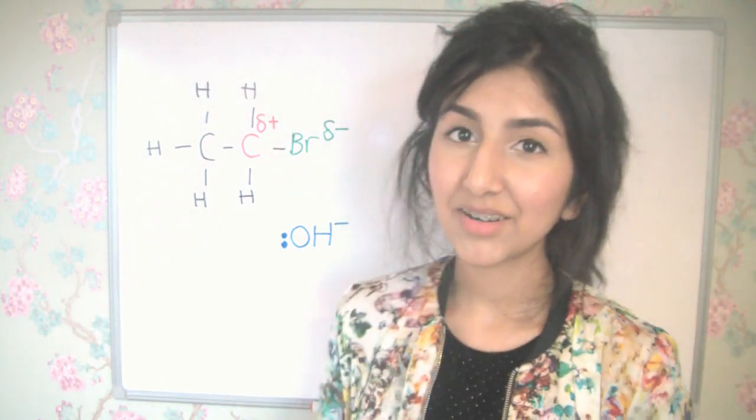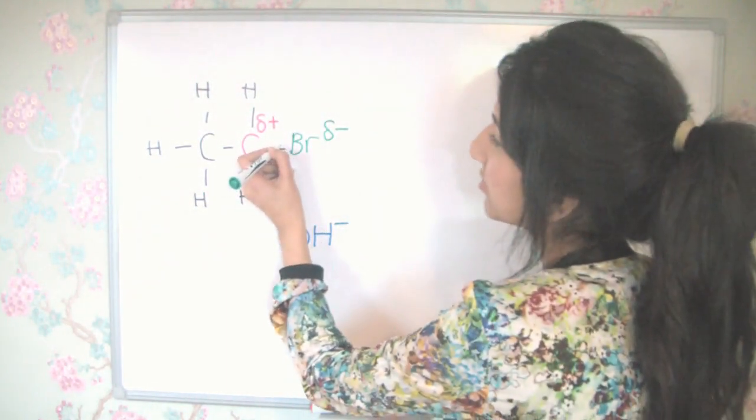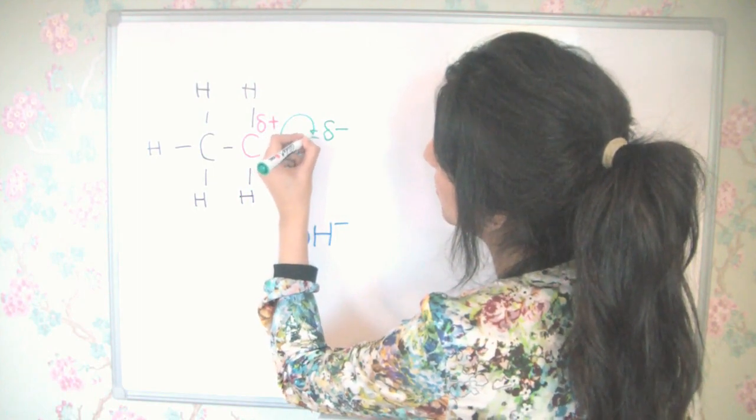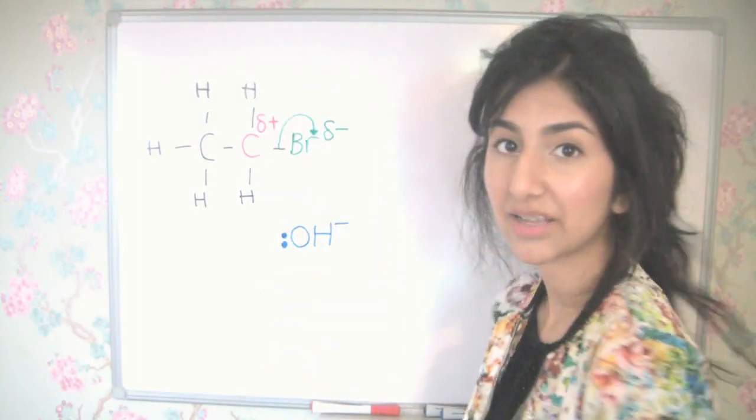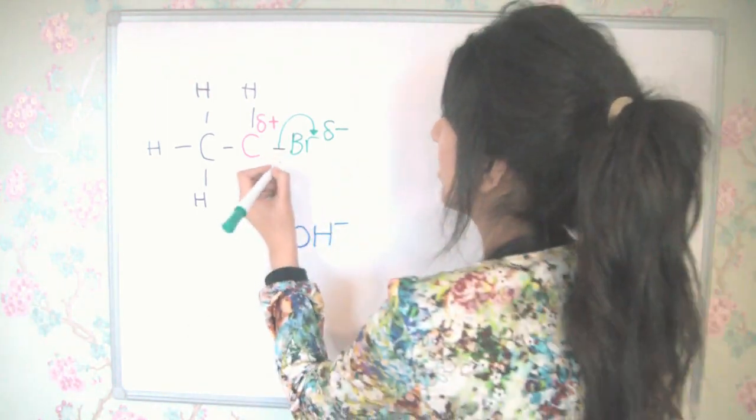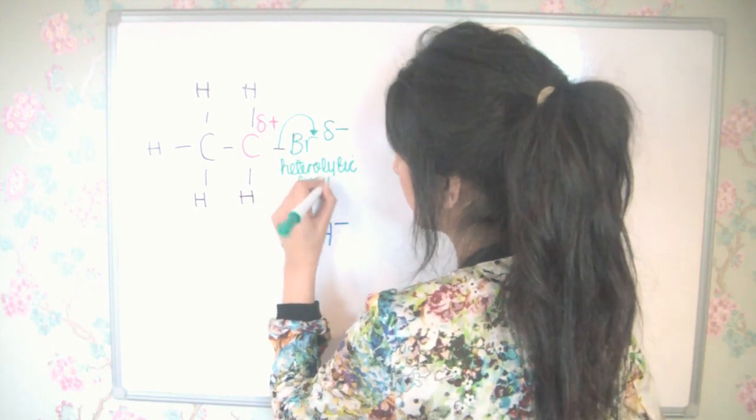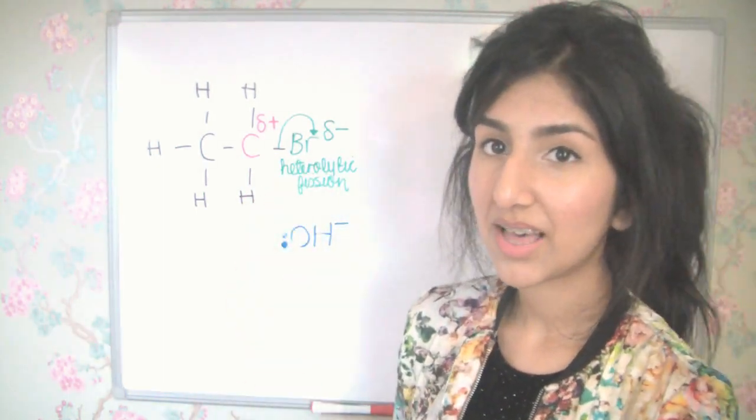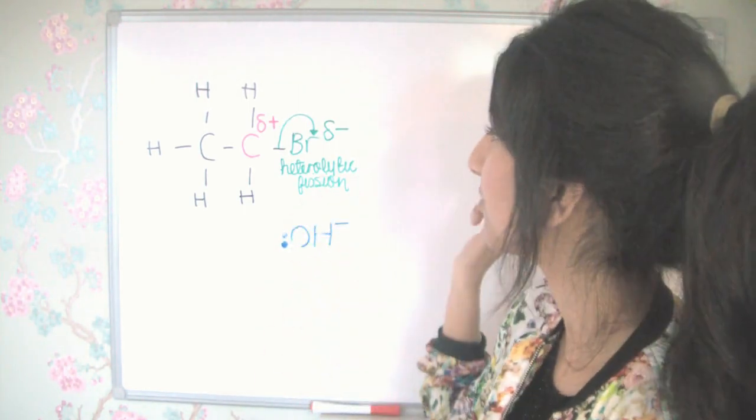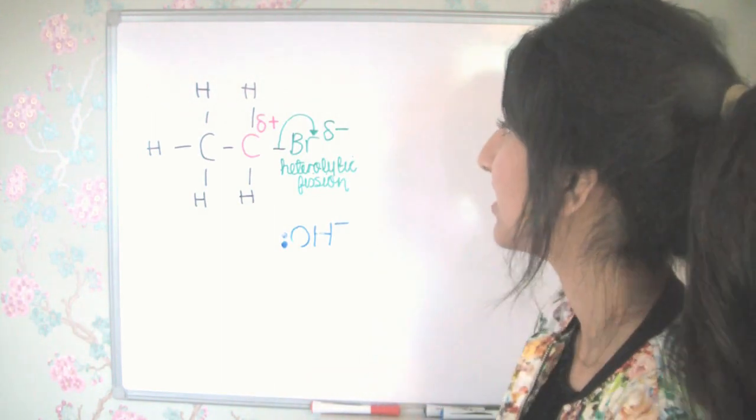So curly arrows represent the movement of a pair of electrons. So here, the pair of electrons in this bond between the carbon and bromine will go to bromine. Both the electrons will be taken with bromine, and this is called heterolytic fission. Heterolytic means that the electrons aren't shared evenly between the atoms. That's homolytic. Heterolytic means that both of the electrons are going to one atom, which in this case is bromine.